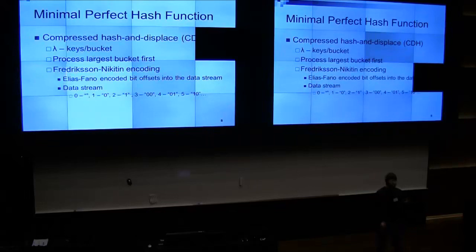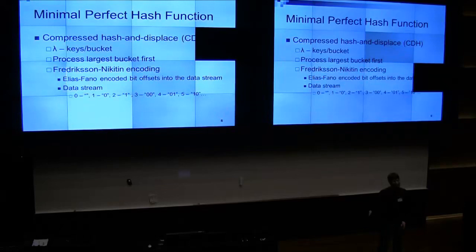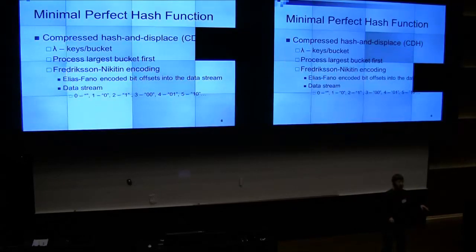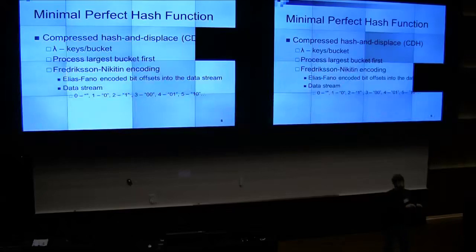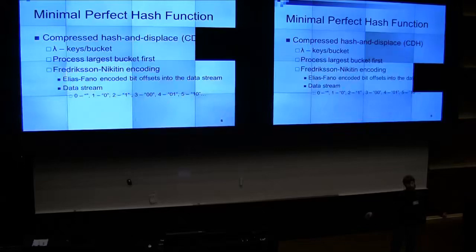You take all the elements in the first bucket, then you have a hash function that randomly distributes them — basically another modulus times some number. It maps them all into little bins, and you try different hash functions until there are no collisions. This was proven in a paper to run in linear time with a large constant. Each bucket's hash function ID — basically how many you had to try — is stored in Fredrickson-Nicotin encoding.